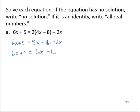I notice that there are variable terms on both sides of the equation. So if I try to move them to the right, I'll subtract the 6x from the right hand side and subtracting 6x from the left as well. Notice what happens here.